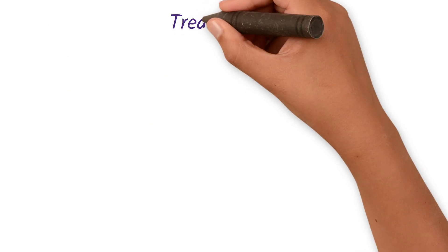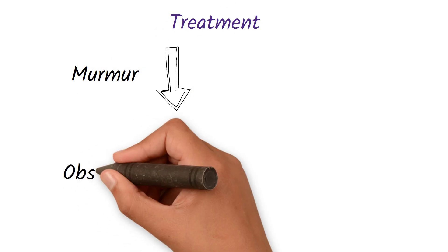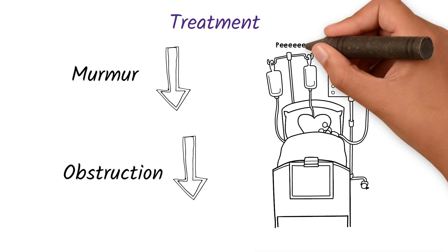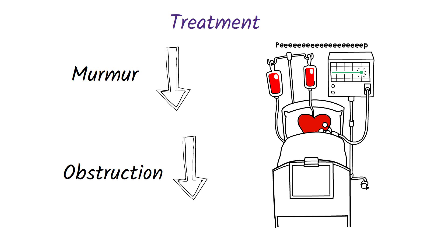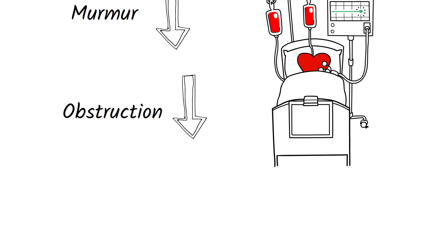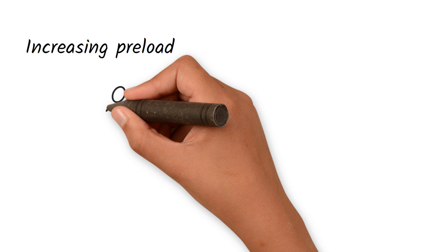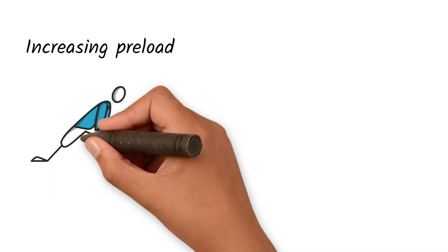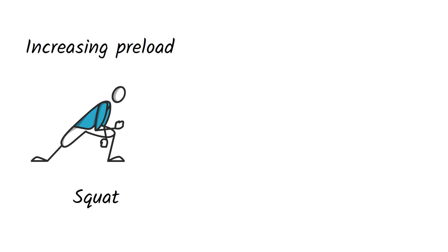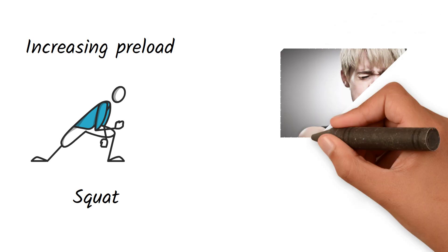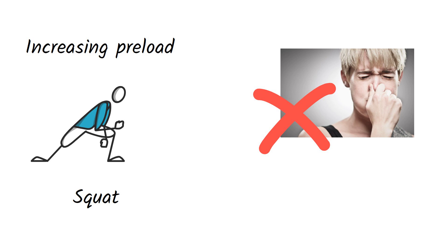Treatment of hypertrophic cardiomyopathy is directed at decreasing the murmur by decreasing the obstruction. We decrease obstruction by keeping the ventricles filled with blood — keeping the chambers more dilated — by increasing the preload and afterload. If a patient squats, this increases venous return and therefore preload. Conversely, a Valsalva maneuver increases intrathoracic pressure, decreases venous return and preload, which increases obstruction and increases the intensity of the murmur.